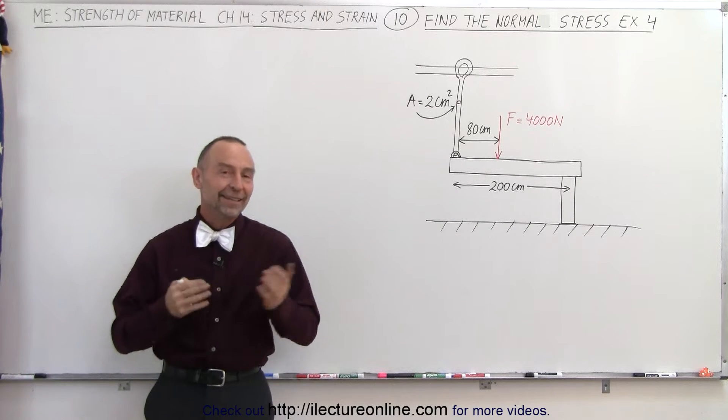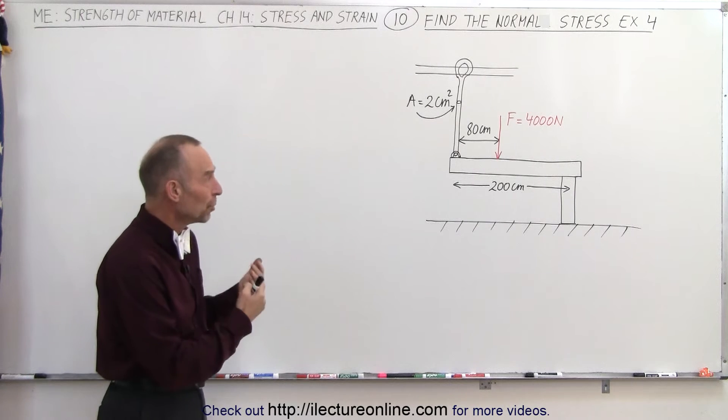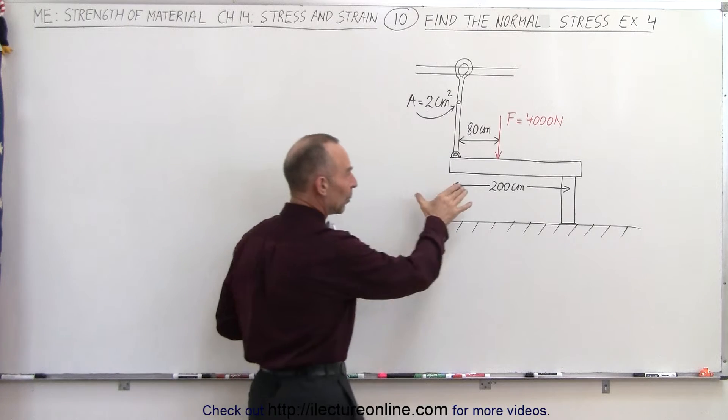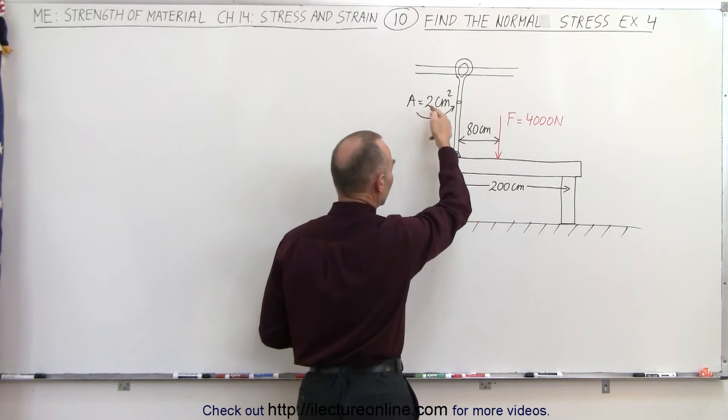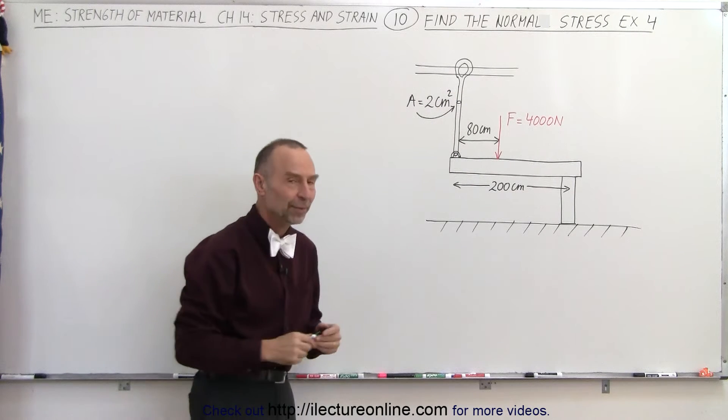Welcome to Electronline. Our next example involves a moment. Notice that we have a beam that on one side is resting on this pillar, on the other side is supported by this cable that has a cross-sectional area of 2 centimeters squared.